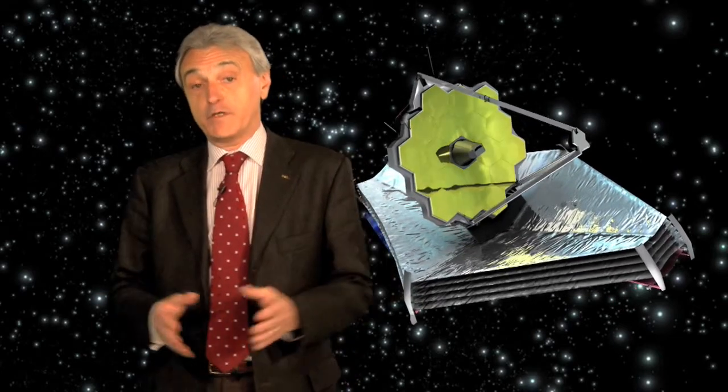Sometimes known as successor to Hubble, there are many aspects of James Webb Space Telescope that are very different, such as the wavelengths of the light it will detect, its orbit and its size.